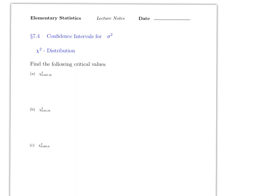Hello everyone. This video covers section 7.4, confidence intervals for sigma squared. This is the last parameter we are going to cover. Just to refresh your memory: in 7.1 and 7.2 we talked about mu, in 7.3 we talked about the proportion, and now we're going to talk about sigma squared. In 7.1 we used either z or t, and now we're going to use chi-square, which is a new distribution.